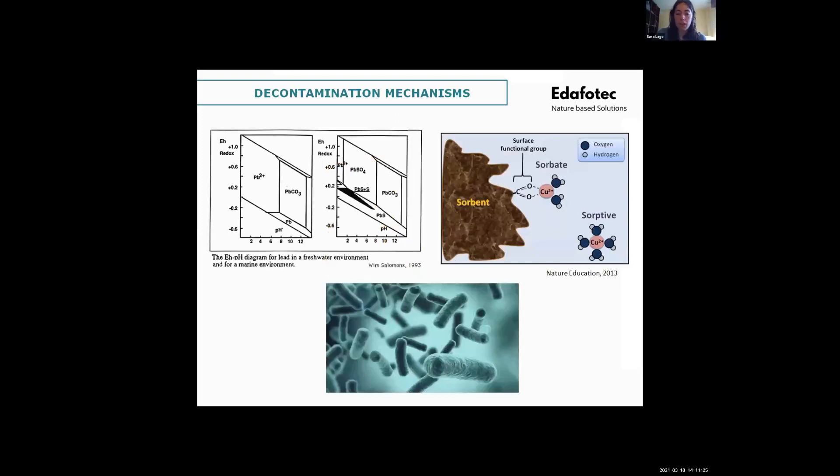Biochar also absorbs the contaminated soils indirectly by different mechanisms. One of them is by raising the pH. With this raise, most of the metals are changed. They become insolubilized and they precipitate. Another one is that biochar also increments the organic matter and the organic matter has a high affinity to form complex with metals. And also, biochar acts as a support for the bacteria. And this bacteria may have the capability of metabolizing organic compounds.